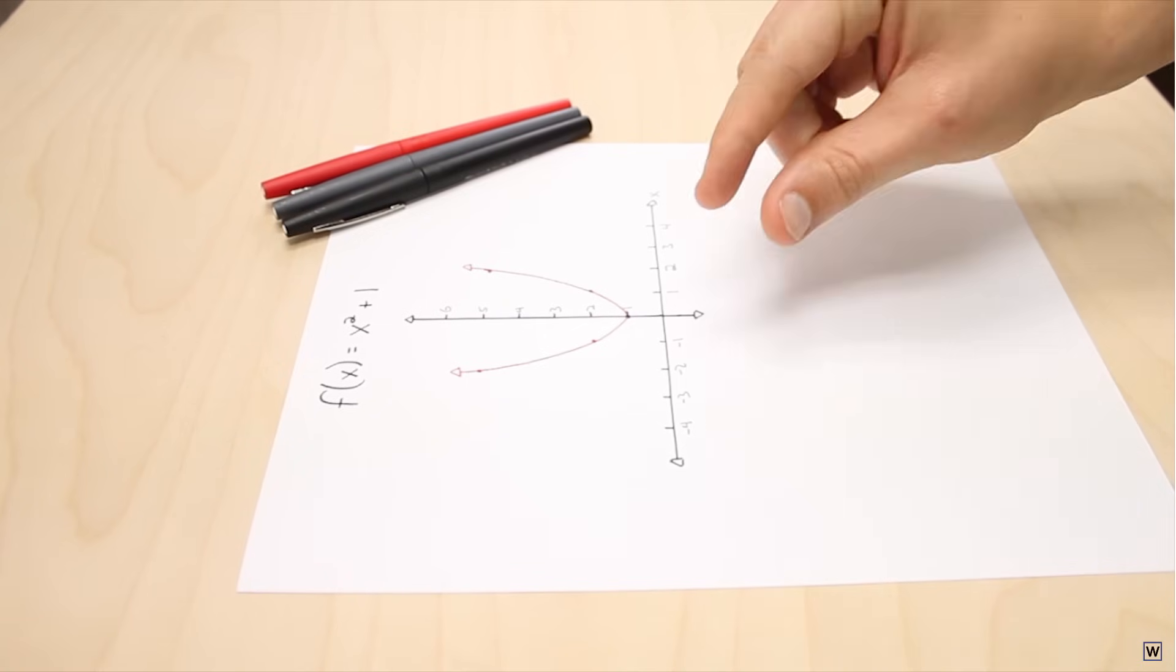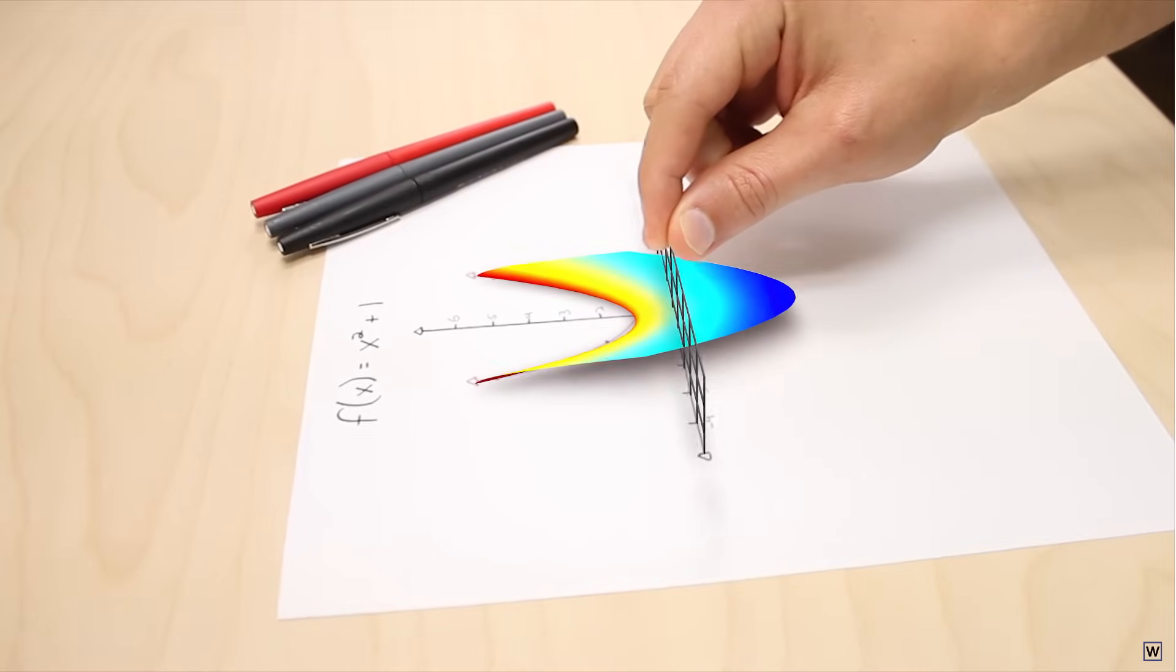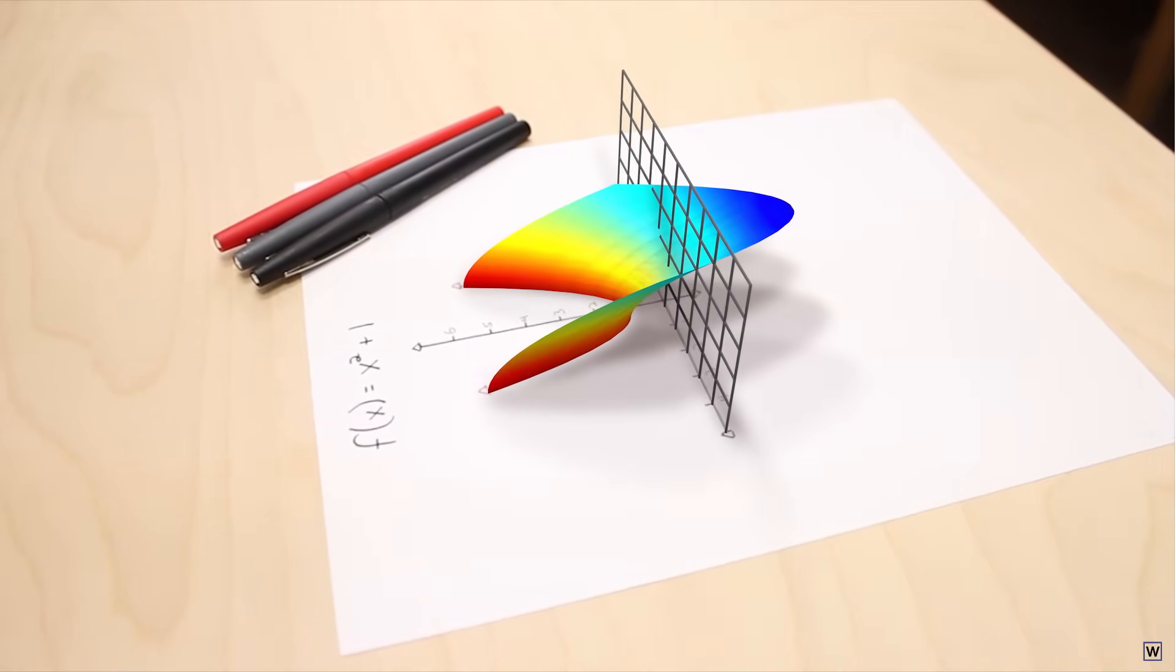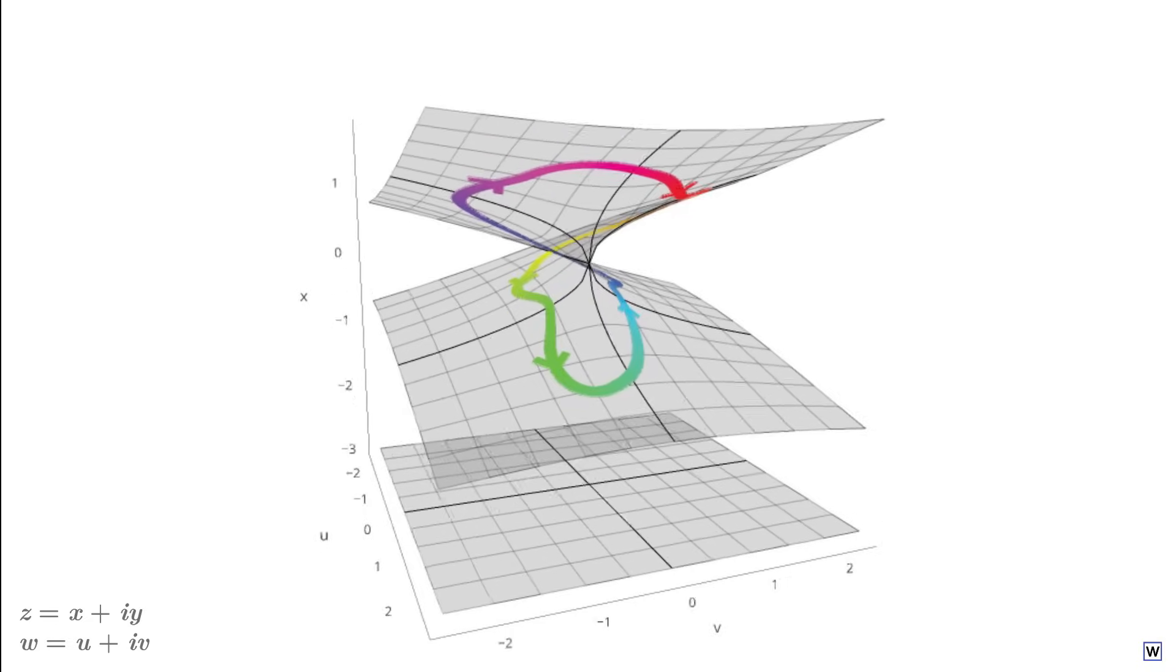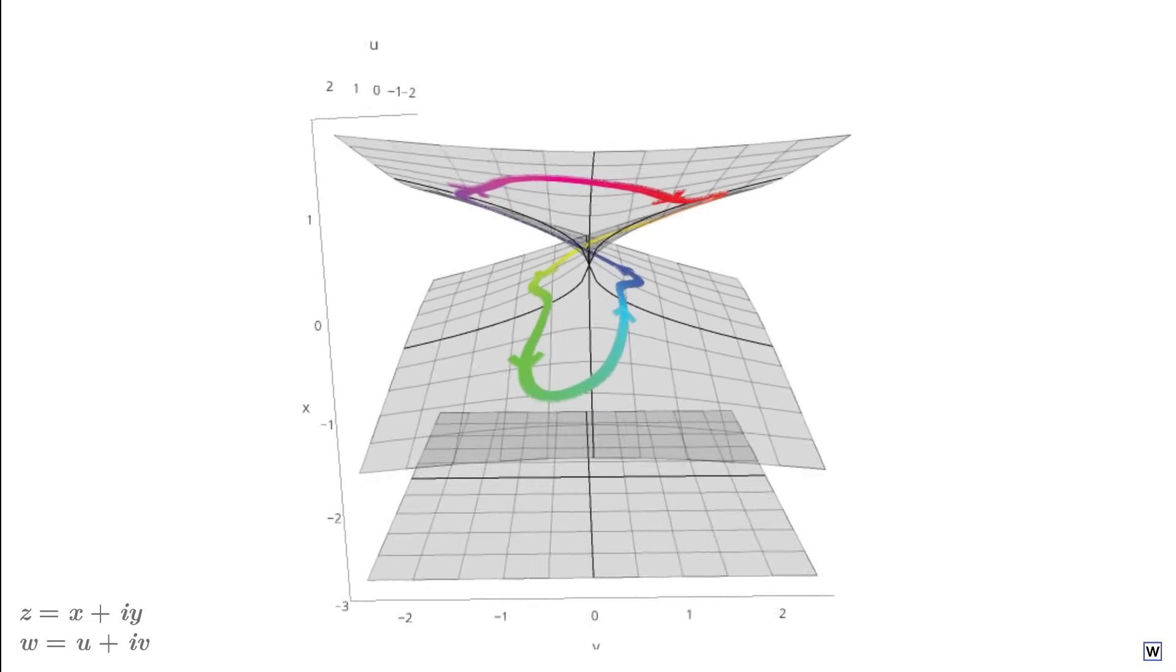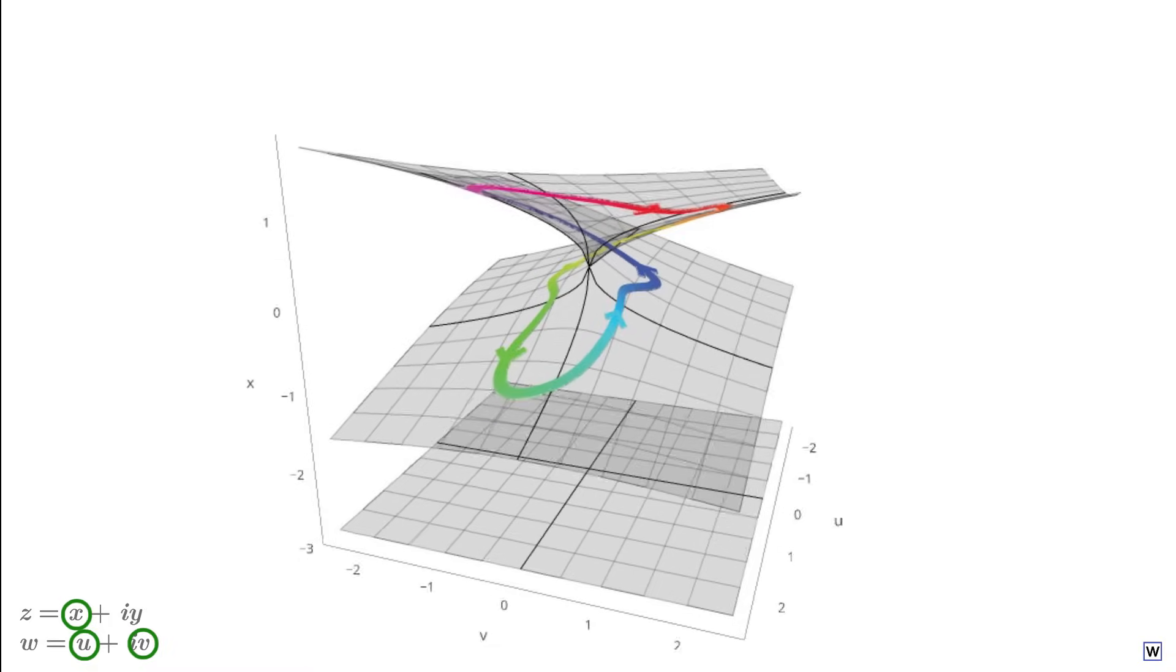Alright, we're finally ready to answer the question. What is this? Our entire discussion has centered around a single function, f of z equals z squared plus one. And so far, we've looked at one way to visualize the Riemann surface for our function by plotting three of our four variables in 3D space.